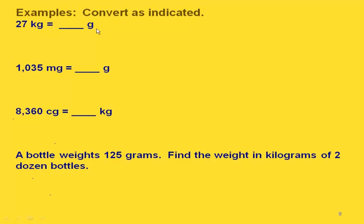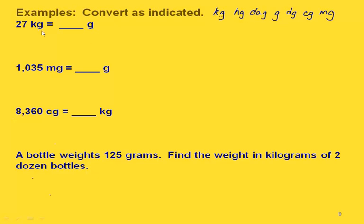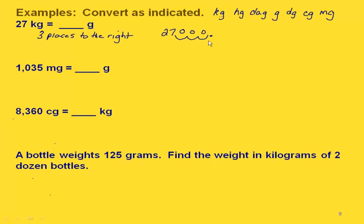Let's convert 27 kilograms to grams. Writing the full list from greatest to smallest to remind ourselves, going from kilograms to grams means we count one, two, three places to the right. We start with 27 — our decimal point starts after the 7 — and we move three places to the right, filling in three zeros as placeholders. So 27 kilograms is the same as 27,000 grams.